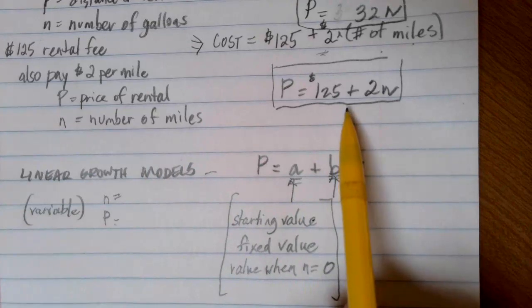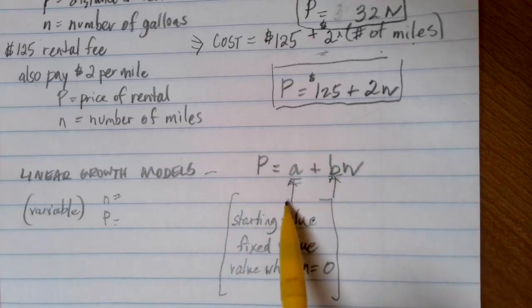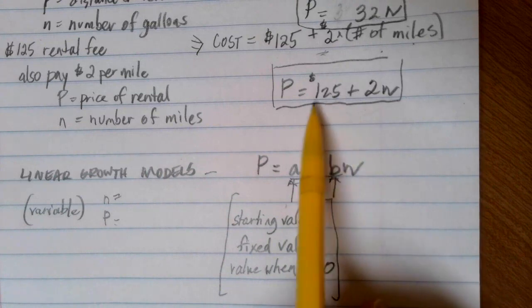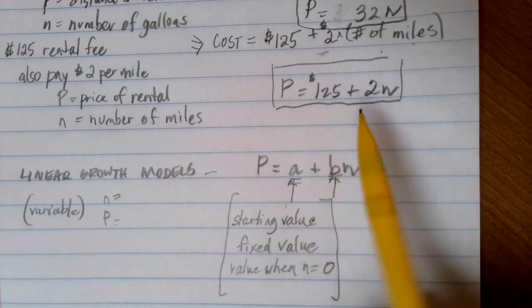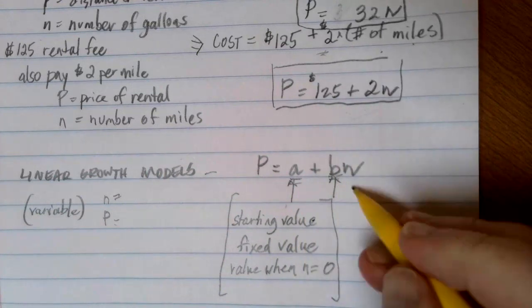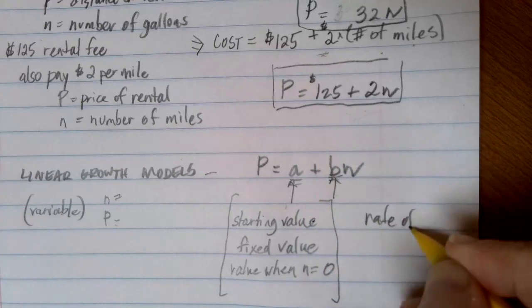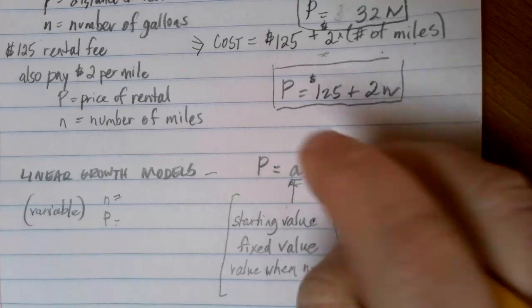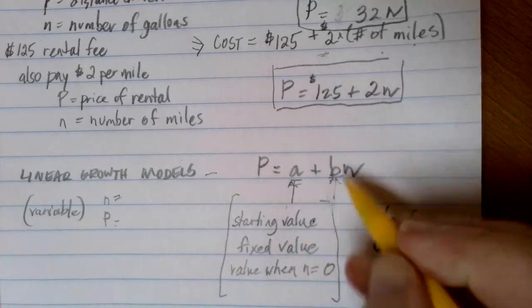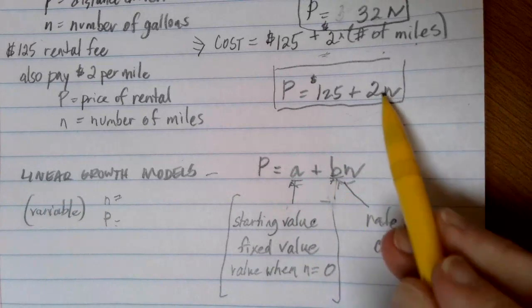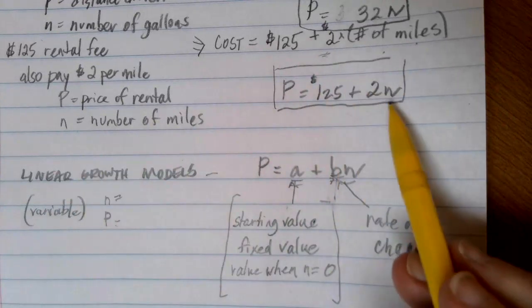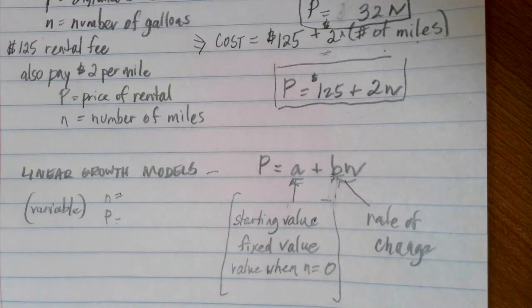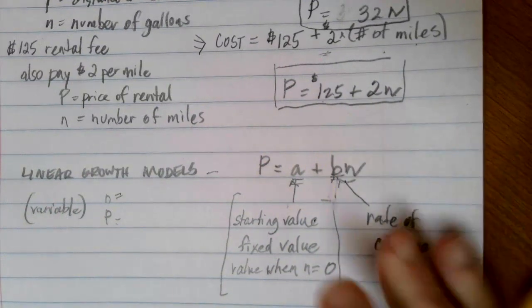So in my truck rental cost example here, my starting value or fixed value is this $125. It's not dependent on any changes. It's always going to be there in terms of my bill. The B is my rate of change. And that's going to be unique for every situation that you come into. So back to our truck rental, what was changing was the number of miles, and we multiply that by $2 for every mile. So we can see this is my A and this is my B.